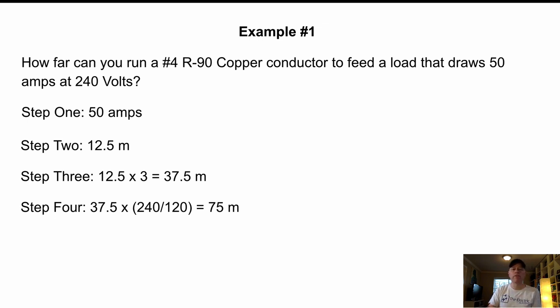Step four is when we start taking into account that voltage. So we've got 37.5 meters. And what we're going to do is multiply that by the voltage factor. So 240 divided by 120 is two. So 37.5 times two equals 75 meters. Now we're going to dive into that distance correction factor.